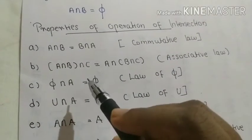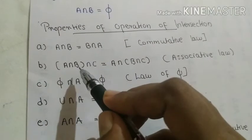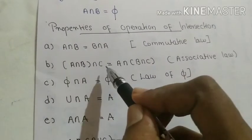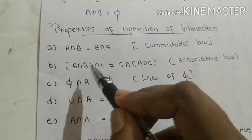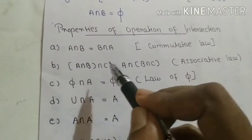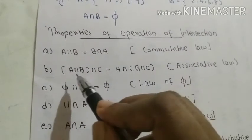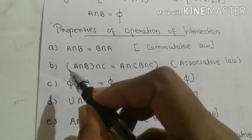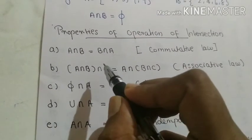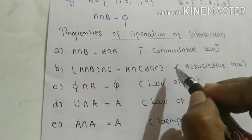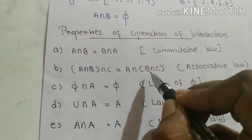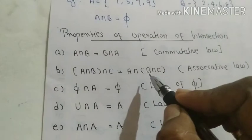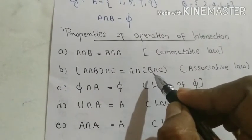The second property is the associative law: (A intersection B) intersection C is equal to A intersection (B intersection C). Here, first we find A intersection B and then find the common elements with C, which equals finding B intersection C first and then finding the common elements with A.